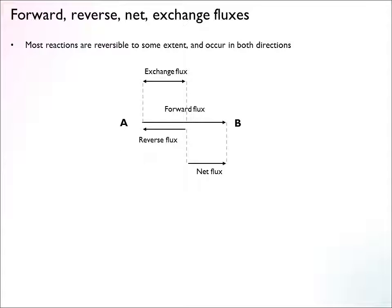Most metabolic reactions are reversible to some extent, meaning they occur in both directions. There is an ongoing synthesis of the product from the substrate, but the reverse also happens at the same time. For example, a substrate A produces a product B in a reaction. In the forward direction there is a forward flux, but there's also a bit of flux in the reverse direction. The net rate of production of B is the net flux — the difference between forward and reverse — so we're going to produce B on net.